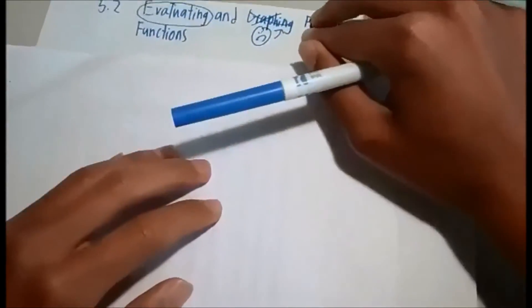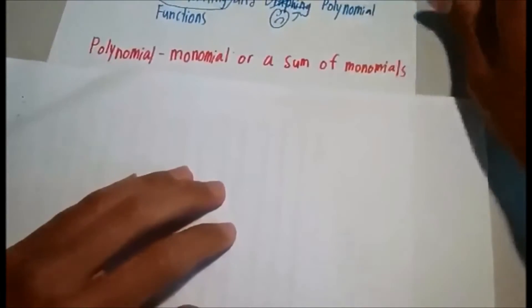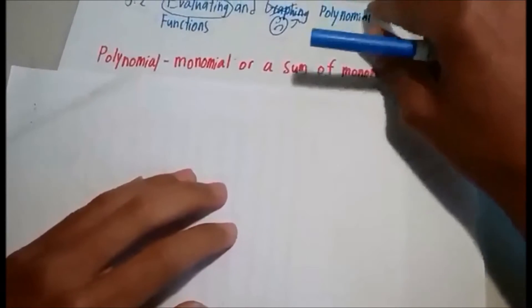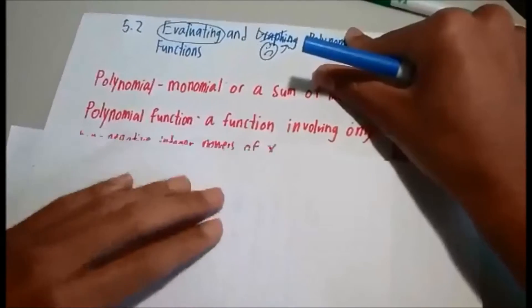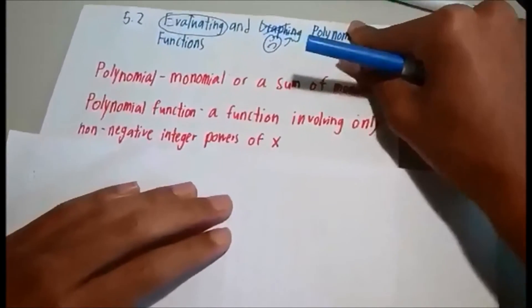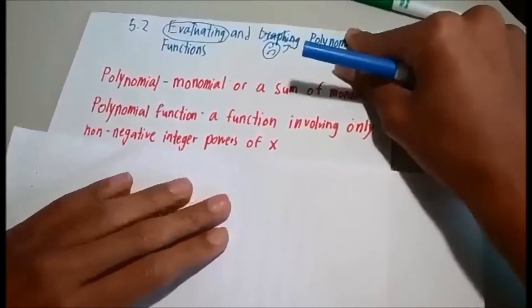The first vocabulary term is polynomial. A polynomial is a monomial or a sum of monomials. The second vocabulary term is polynomial function. A polynomial function is a function involving only non-negative integer powers of x. Let's get started, shall we?